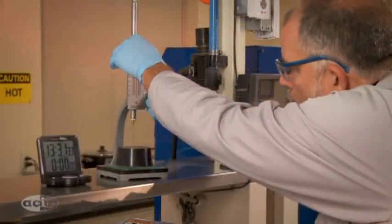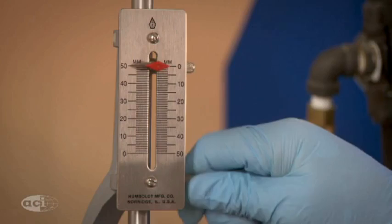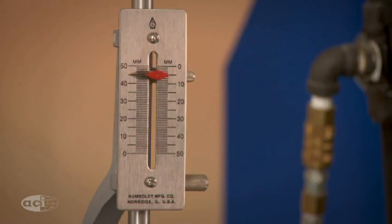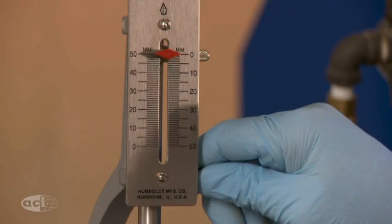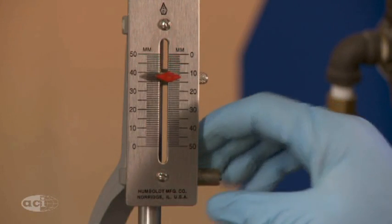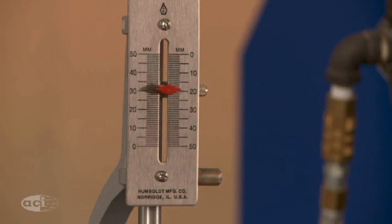Periodic penetration measurements are performed by allowing a 1 mm Vicat needle to settle into the paste specimen. The Vicat initial time of setting is determined when the penetration of the 1 mm needle of the Vicat apparatus is measured or calculated to be 25 mm into the paste.